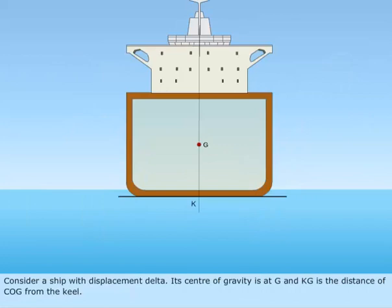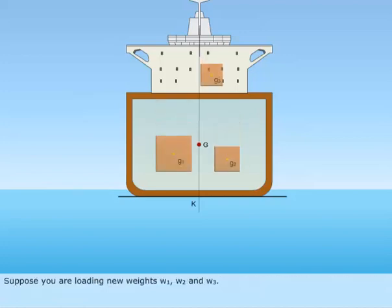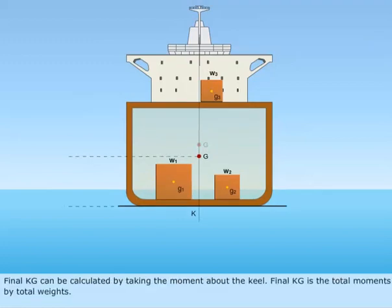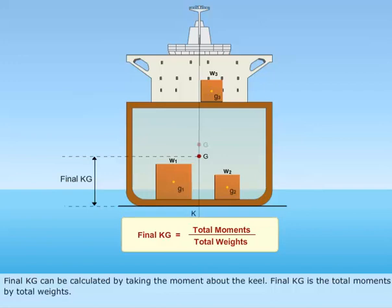Consider a ship with displacement delta. Its center of gravity is at G and KG is the distance of the center of gravity from the keel. Suppose you are loading new weights W1, W2, and W3. Final KG can be calculated by taking the moment about the keel. Final KG is the total moments divided by total weights.